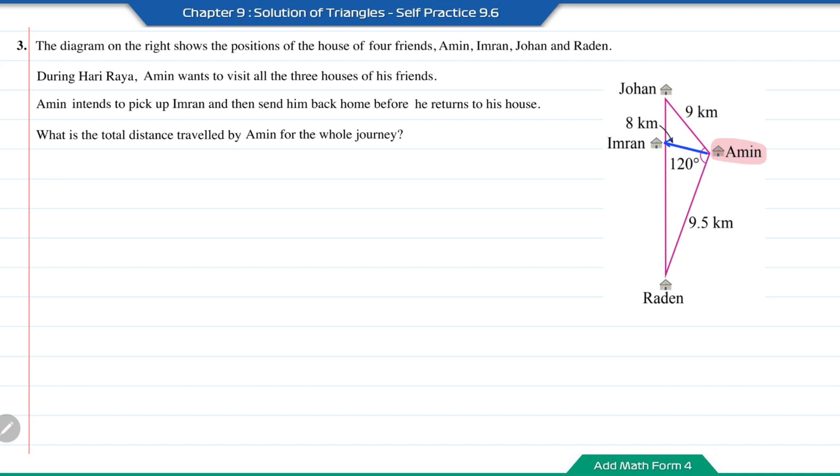So this means first, Amin will go to Imran's house first because he wants to pick up Imran and visit him as well. After that, both of them can go to Johan's house or Raden's house. So here let's say both of them go to Johan's house first. Then later on from Johan's house, they will move to Raden's house. After that, Amin will send Imran home. Then later, Amin will return to his house. That will be the total distance traveled by Amin.